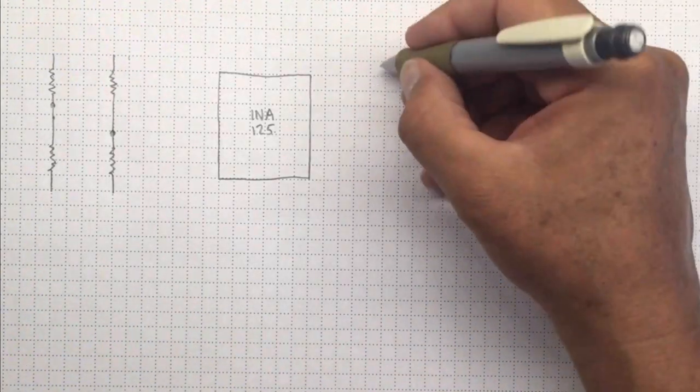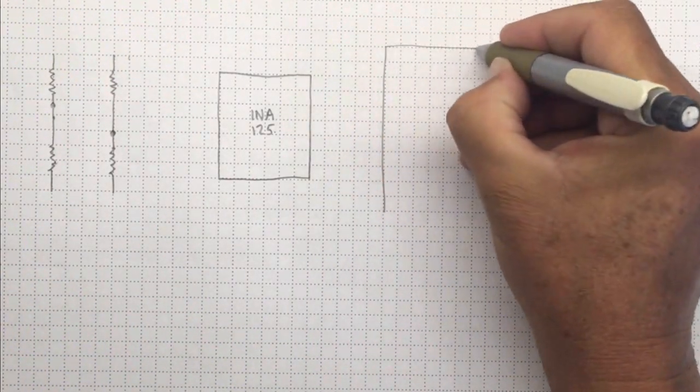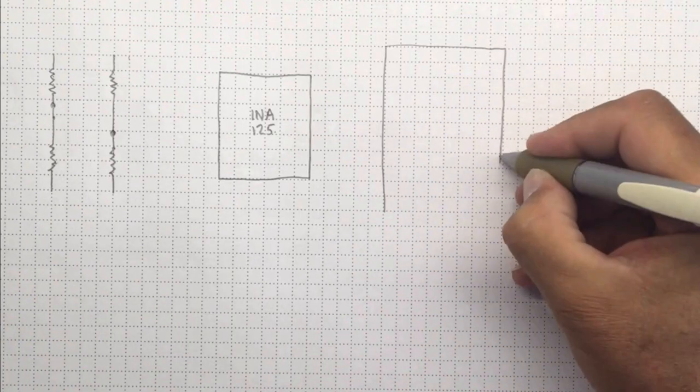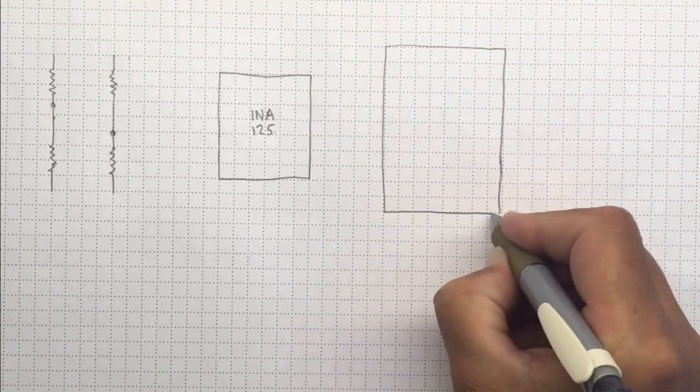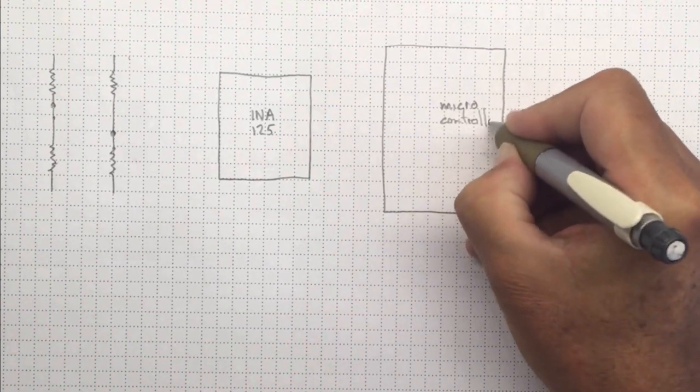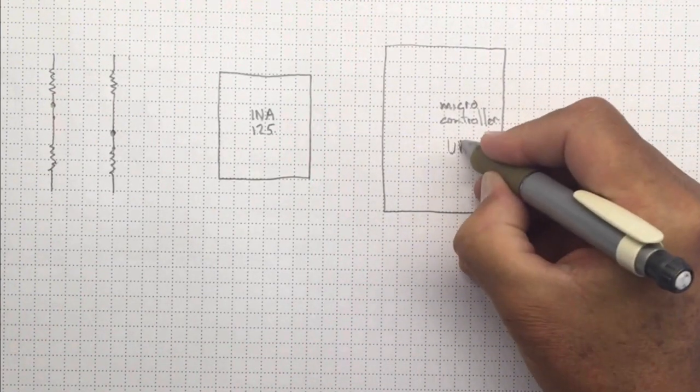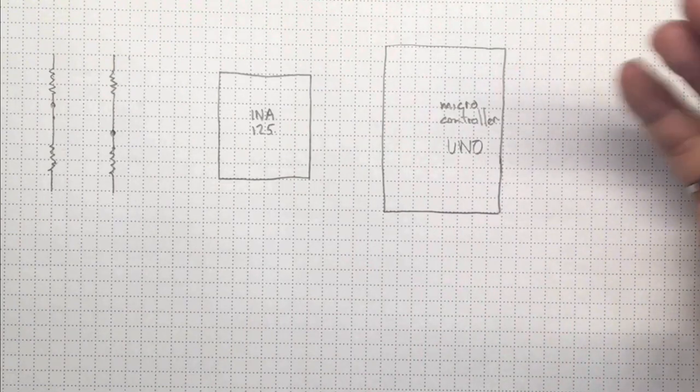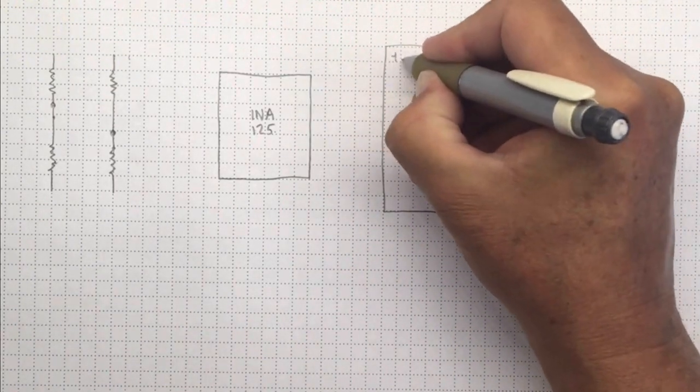Finally, we're going to use a microcontroller over here. And again, I'm representing it just schematically as a big black box, so that we can figure out how all of our components are going to interact. So this is our microcontroller.